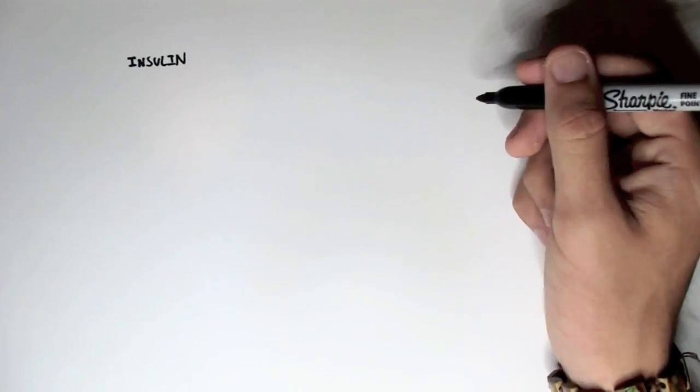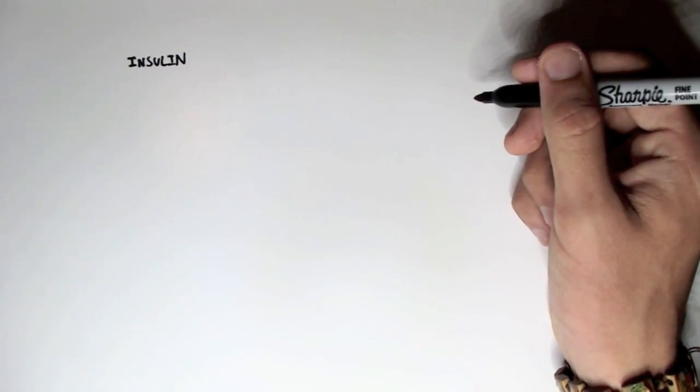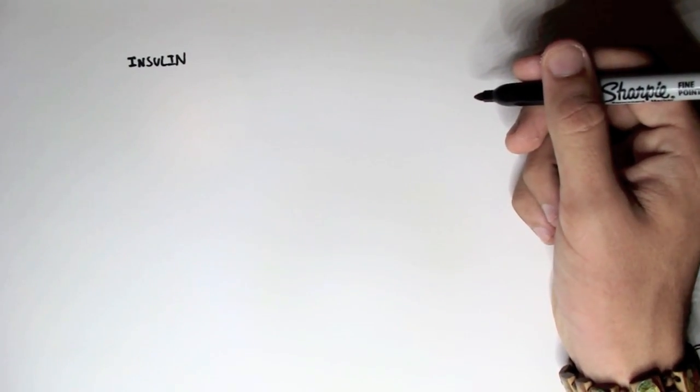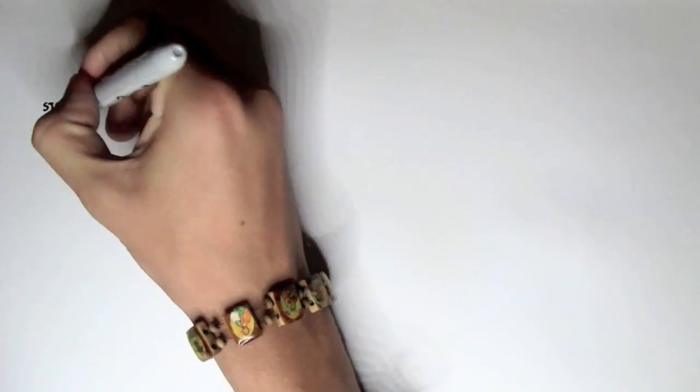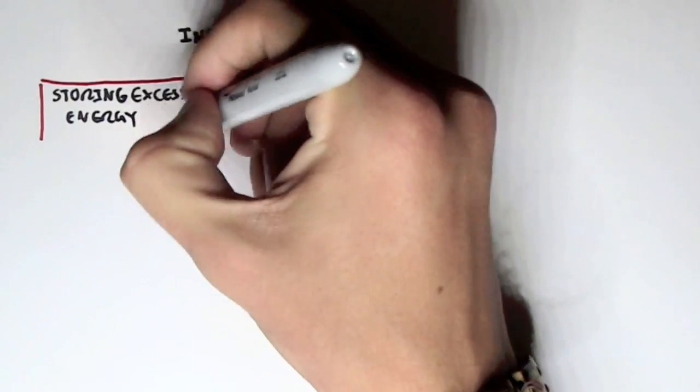Let's talk about insulin. Insulin is a polypeptide hormone and it has a major role in the regulation of macromolecules within our body and in the homeostatic condition of metabolism. But the main role insulin has is in storing excess energy — storing fats, lipids, carbohydrates, and proteins, such as during a fed state.